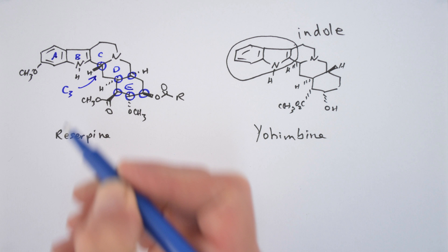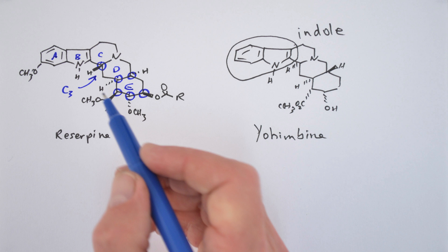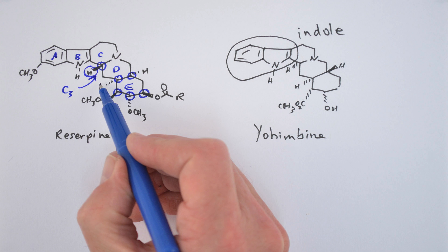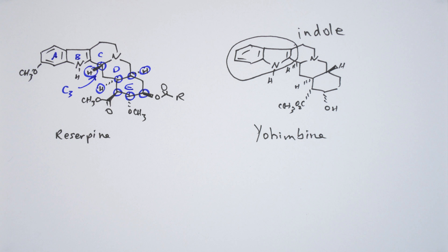The sixth chiral center occurs at C3 of the molecule, where the hydrogen, as drawn, is pointed up, opposite the DE ring junction hydrogens.